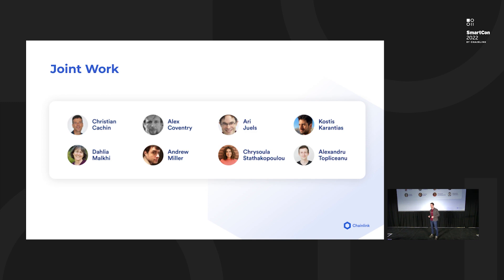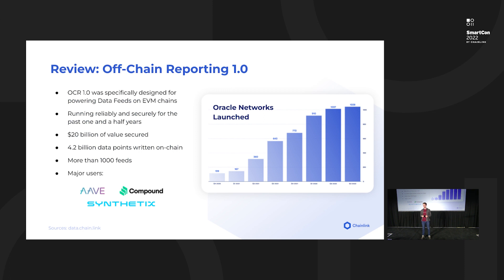A natural starting point is to dive into a review of what Off-Chain Reporting Protocol 1.0 — OCR 1 — was, and then look at the improvements and evolution we've made towards OCR 2. OCR 1 was specifically designed for powering our data feeds on EVM chains, that is to say Ethereum-like blockchains.